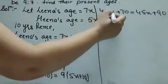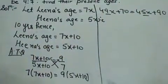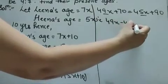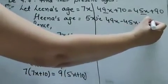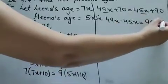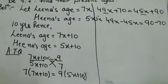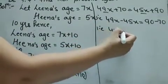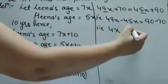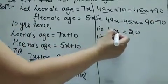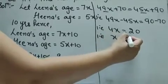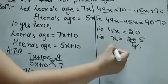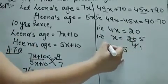Now bring the X terms to one side and the constants to the other side. On transposing, signs change: 49X minus 45X equals 90 minus 70, giving us 4X equals 20. Dividing both sides by 4, we get X equal to 5.